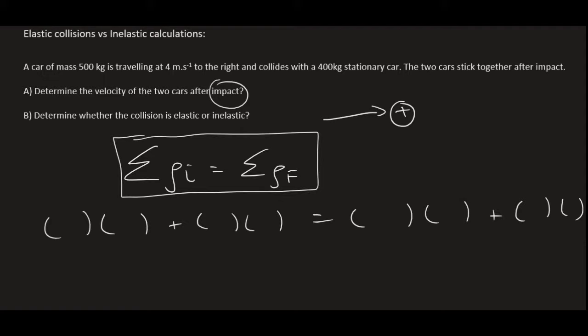I'm going to call the 500 kilogram car A and the 400 kilogram car B. So we're going to have mass of A, velocity of A, and then I'm going to put an I for initial, or I could use small letter i, it doesn't really matter. And then mass B and velocity of B initial. Mass of A, velocity of A final.